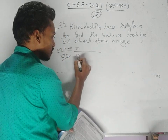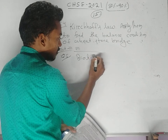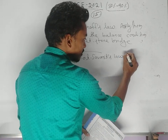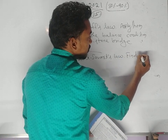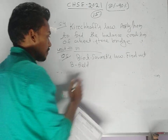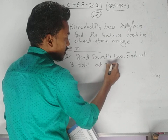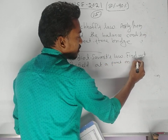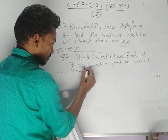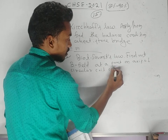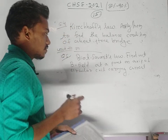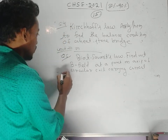State the Biot-Savart law and using this, find out the magnetic field at a point on the axis of a circular coil carrying current.